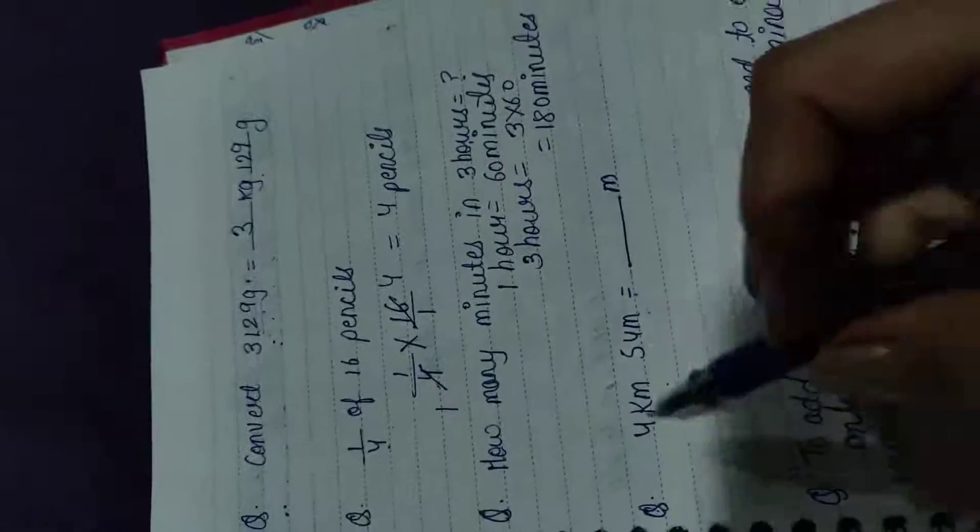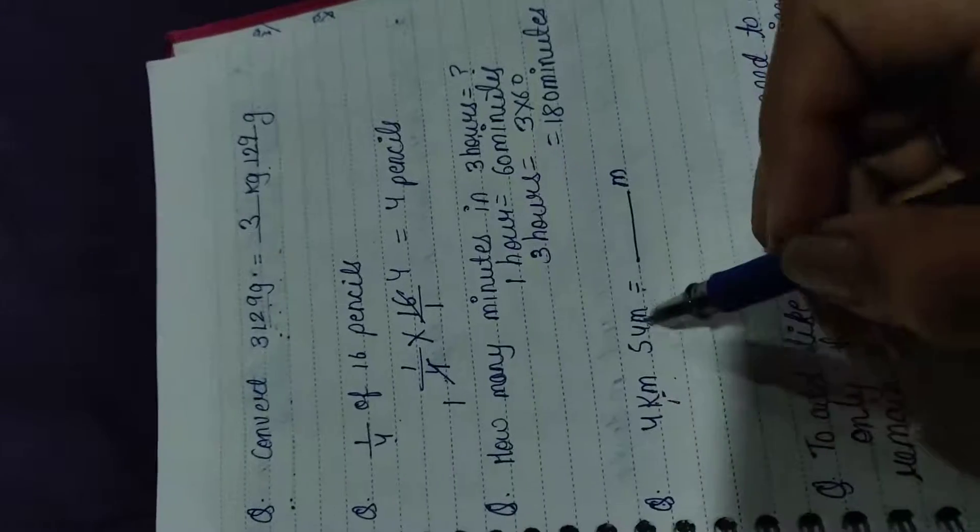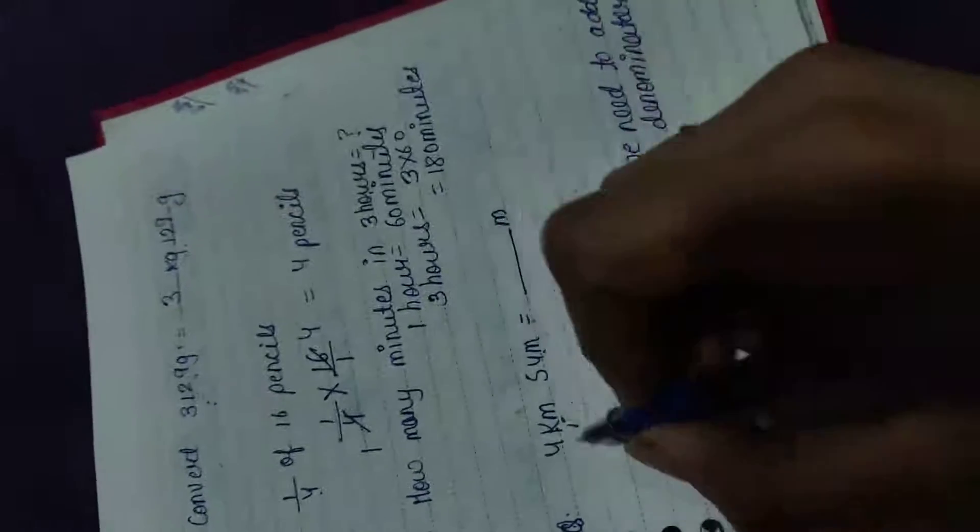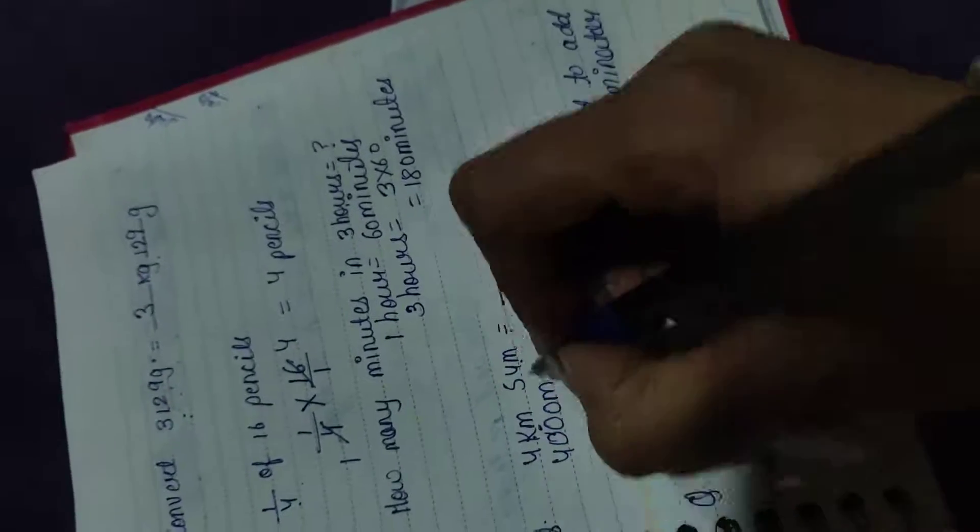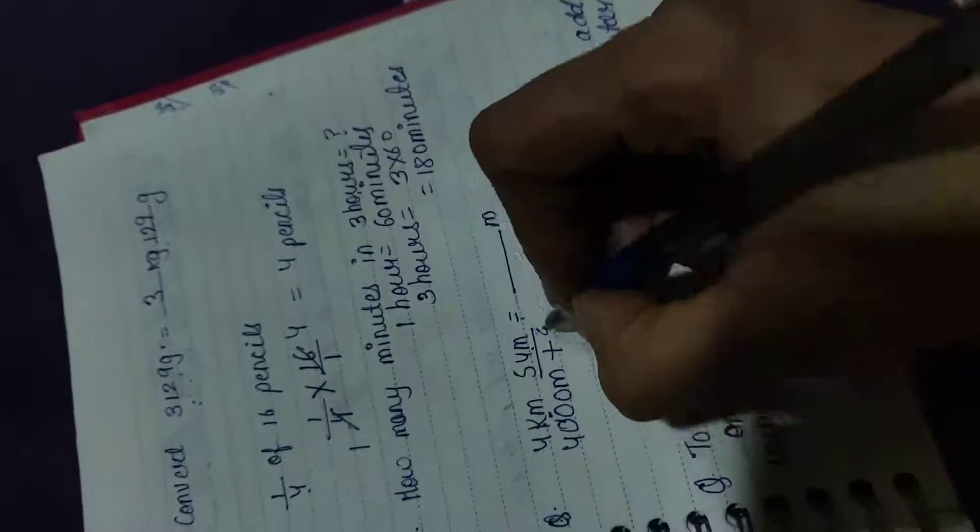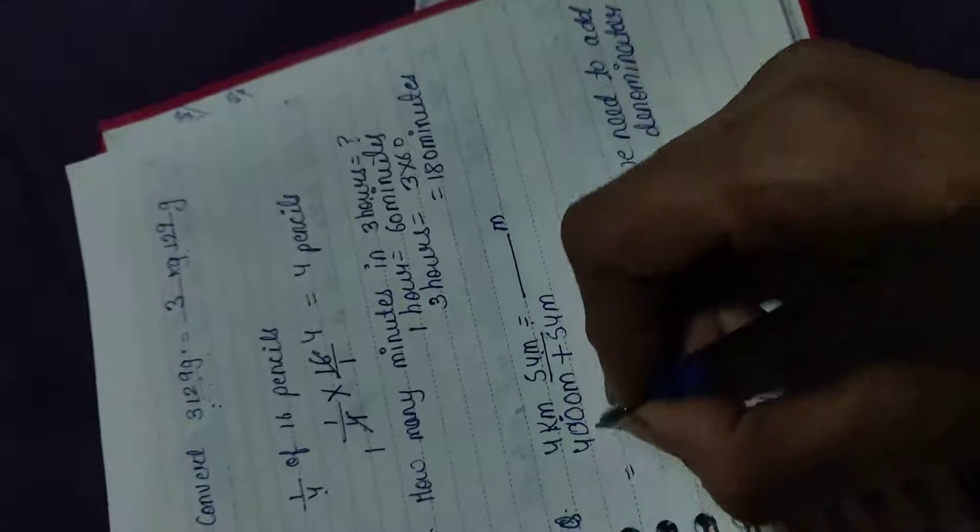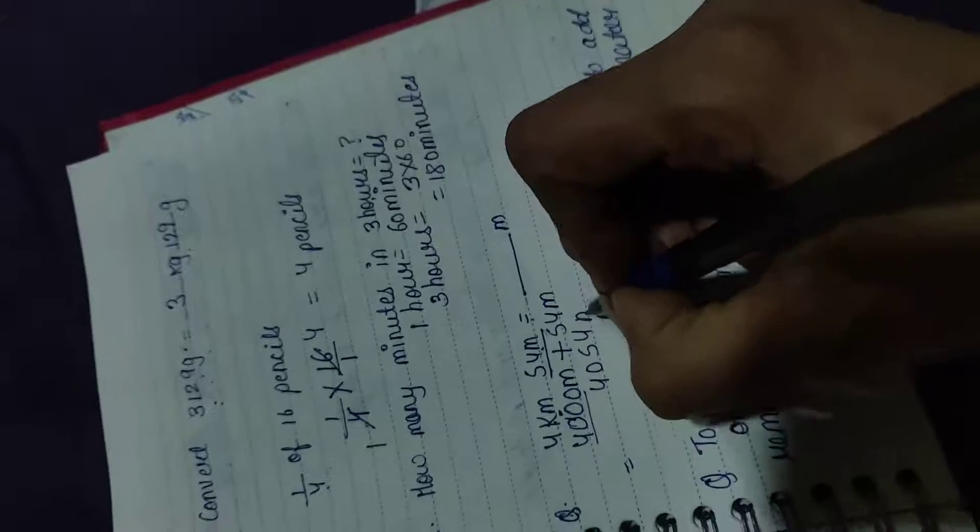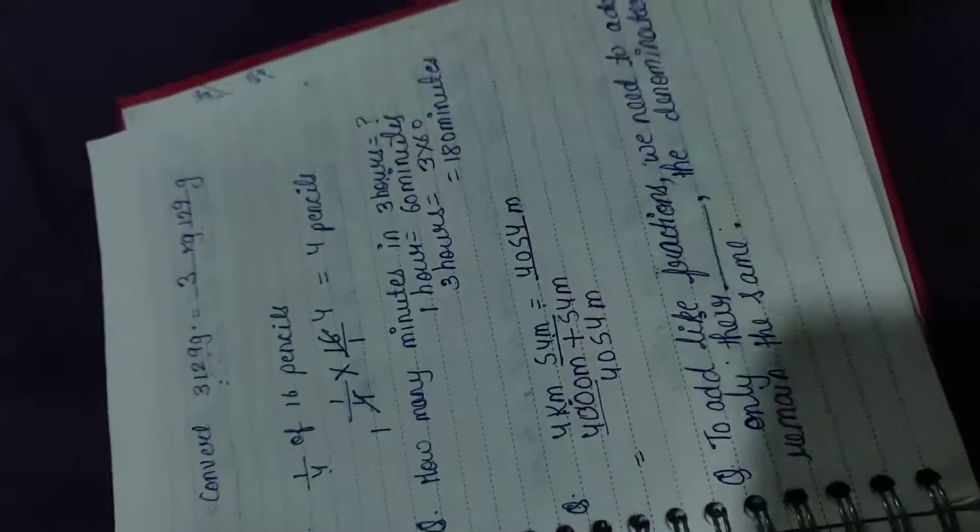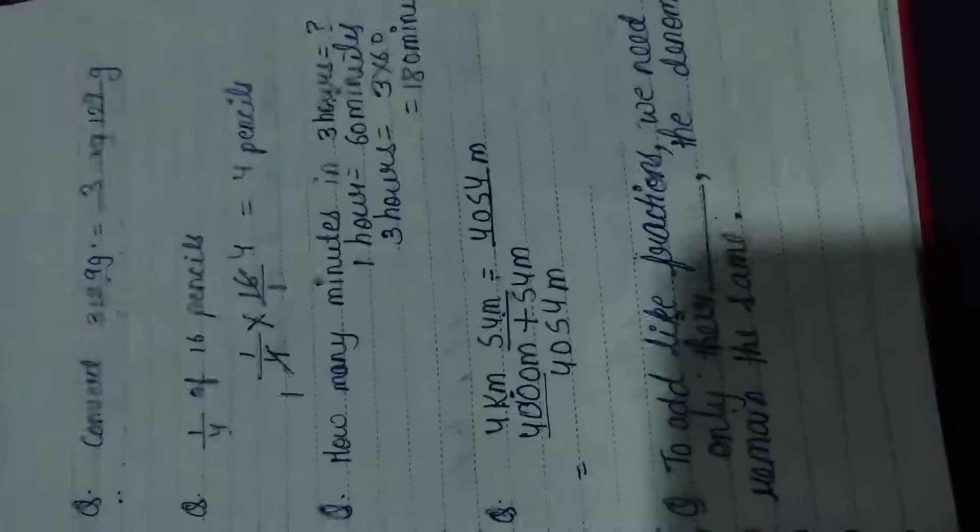Next question: Convert karna hai 4 km 54 meter ko meter mein. 1 km mein 1000 meter hote hain. To 4 km mein 4000 meter. Aur ye to already meter mein hai. To isko hum plus kar denge. Aur jab 4000 ko 54 se plus kar denge, to have 4,054 meters.